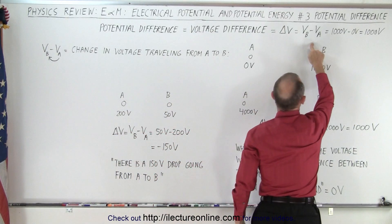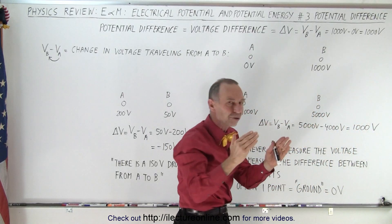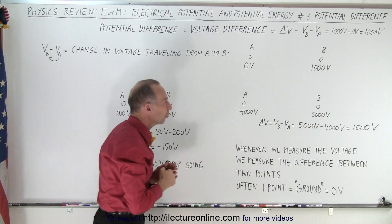So in this case VB minus VA would be a thousand volts minus zero volts which is a thousand volts. That's a thousand volts potential difference as we said, or voltage difference.